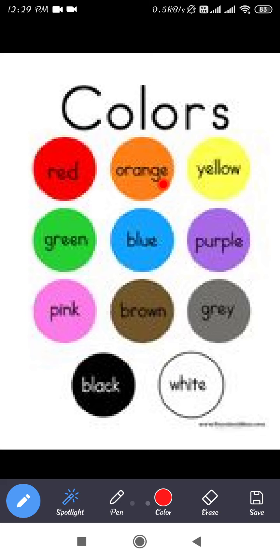The next circle is representing yellow color. Yellow — Y E L L O W. Next is green color. The spelling of green is G R E E N.